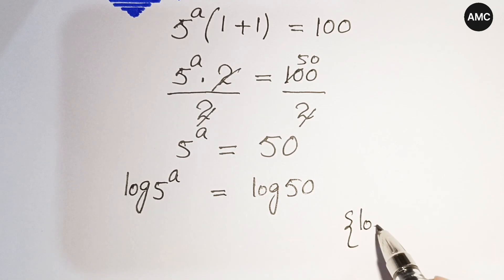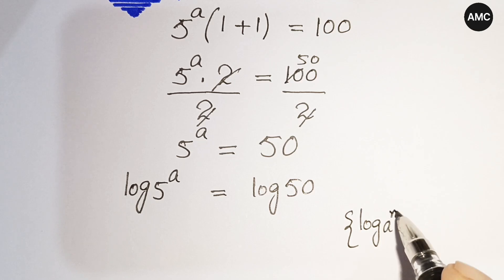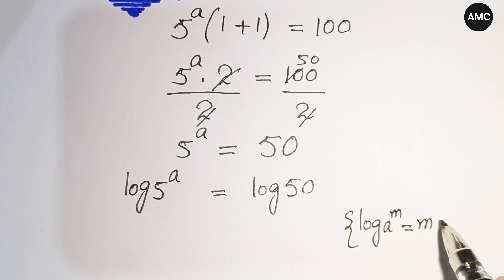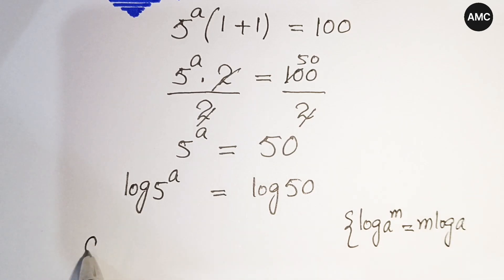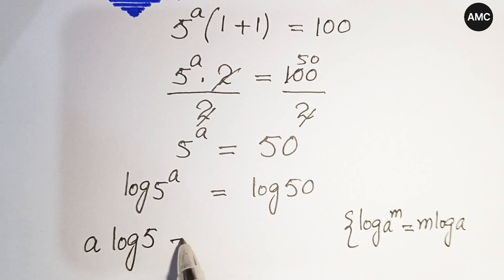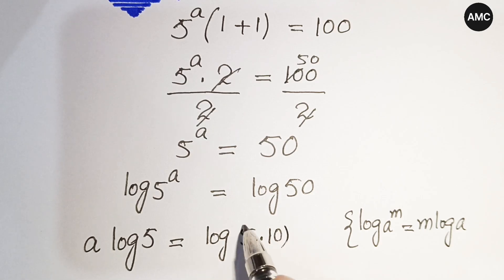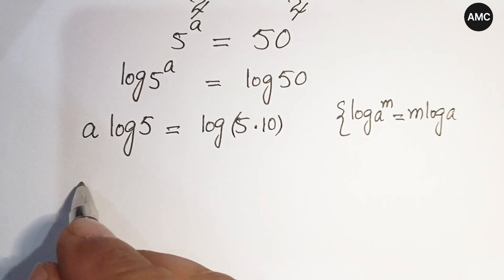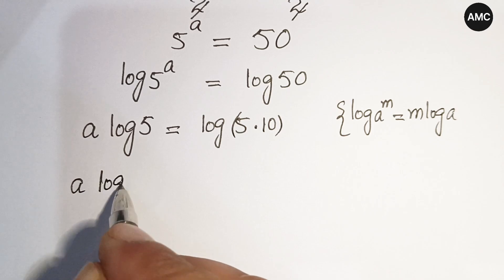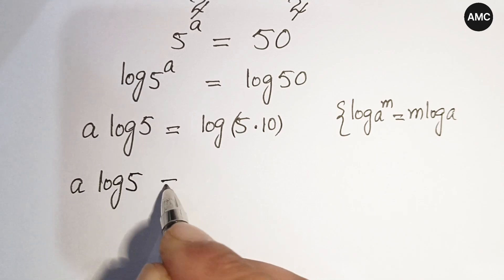Applying the logarithm power law — log of a to the power m equals m times log a — our left-hand side becomes a times log 5, equal to log 50. Now log 50 can be written as log of 5 times 10.